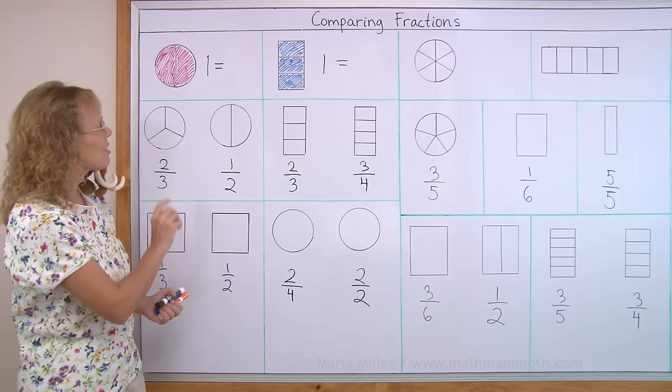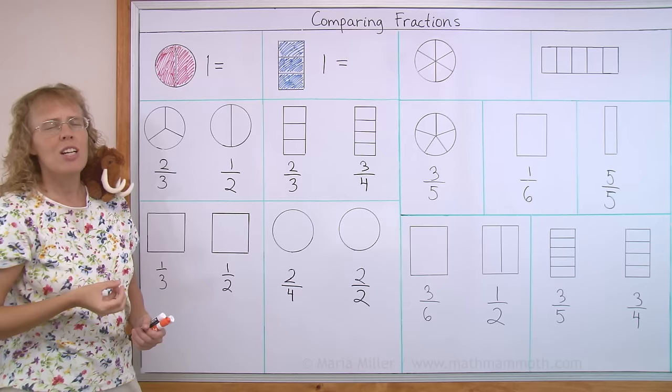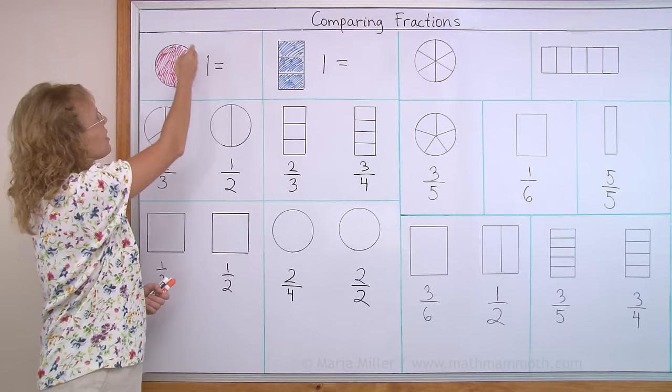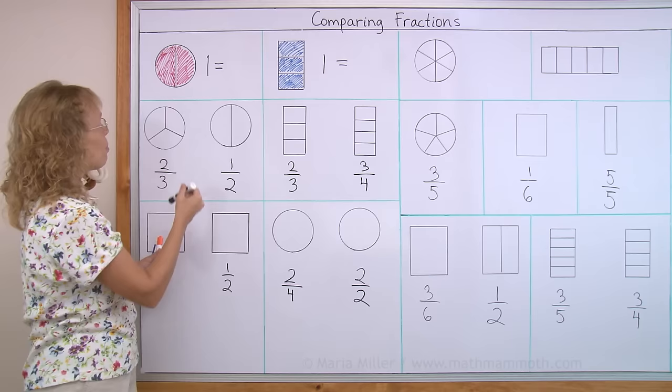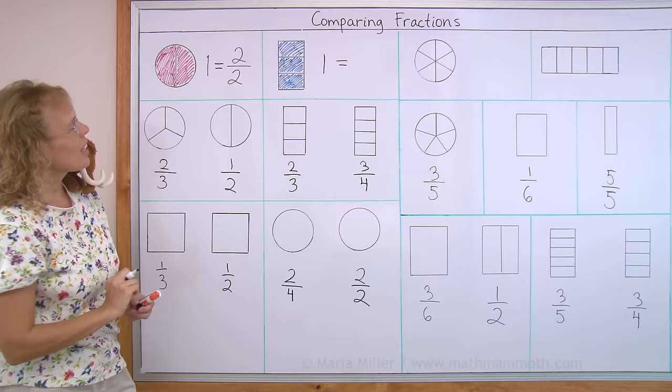But first, before we get into comparing, we're going to review something important. Here I have one whole circle, but I divide it into two parts, and both parts are colored. What fraction is it therefore? I wrote here one because it's one whole, but we can also write it as a fraction. Since there are two parts, then it is two there, and since two are colored, two here too, and we read it as two halves.